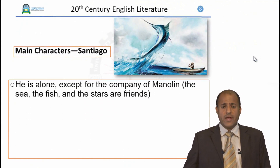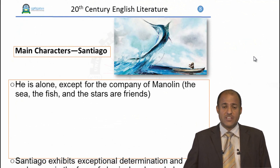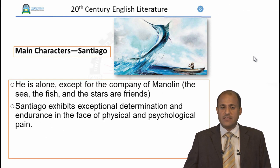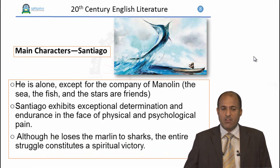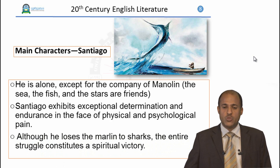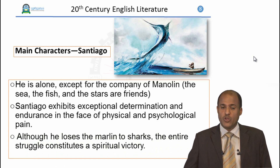Santiago is alone except for the company of Manolin. The sea, the fish, and the stars are his friends. Santiago exhibits exceptional determination and endurance in the face of physical and psychological pain. Although he loses the marlin to sharks, the entire struggle constitutes a spiritual victory. So he lost the physical battle but he won the spiritual one.